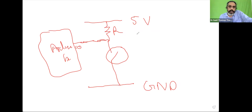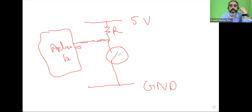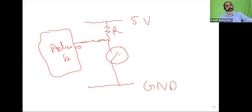In our experiment, we will write a program so that we can find out the status of the switch — whether it is open or whether it is closed. When you press the switch, the Arduino should give you some message that the switch has been closed, and if it is open it should say something else.